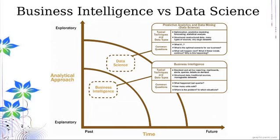In data science, you have optimization, predictive modeling, forecasting, and statistical analysis. Data science can build more accurate models to forecast possible future events in the market. It uses both structured and unstructured data sources and can handle very large data sets. Common questions are: what's the optimal scenario for our business? What will happen next? The outlook is futuristic. That said, business intelligence is not inferior — you also need a sense of business intelligence.